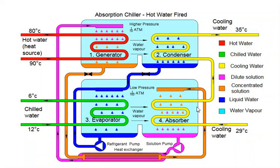Today I will explain the working of an absorption chiller. An absorption chiller is a chiller in which lithium bromide solution is used as a refrigerant — but lithium bromide is not the actual refrigerant. The actual refrigerant is water.